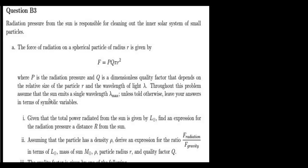Throughout the problem, assume that the sun emits a single wavelength lambda maximum. Unless told otherwise, leave your answer in terms of symbolic variables. This question is basically related to the concept of radiation pressure — we have to concentrate on the particle nature of light.